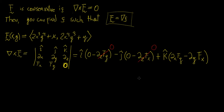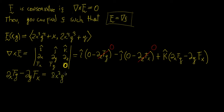This leaves us with just one component — essentially x·∂Fy/∂x minus y·∂Fx/∂y. We differentiate the y-component with respect to x, giving us 8x³y³, then we differentiate the x-component with respect to y, giving us 8x³y³. Subtracting these two, they cancel to zero. So every single component of this curl is zero, confirming that vector field F is conservative.